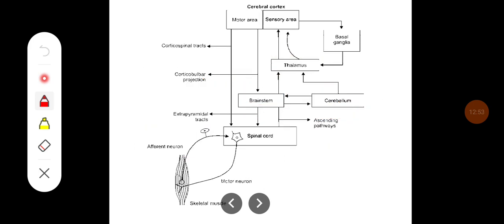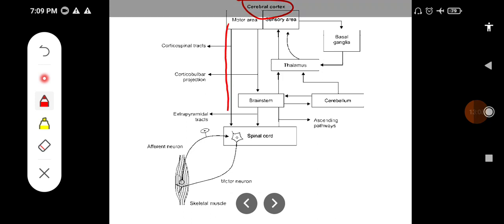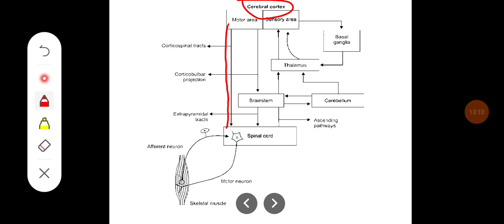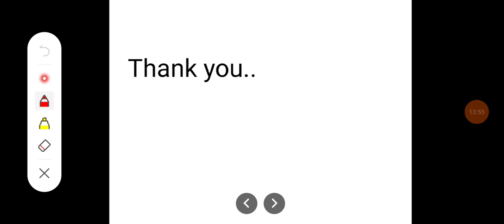This overall diagram shows the control of motor movement. Movement is initiated in the cerebral cortex and transmitted through the corticospinal tract and corticobulbar tract to the spinal cord where movement is executed. The basal ganglia provide feedback to motor movements via the thalamus, and the cerebellum also gives its feedback via the thalamus. The cerebellum is extensively connected to the cerebral cortex. From the spinal cord, ascending pathways provide negative feedback mechanisms to complete the motor control loop.